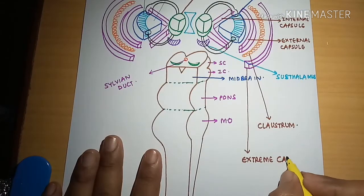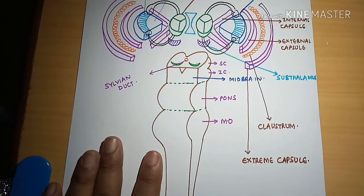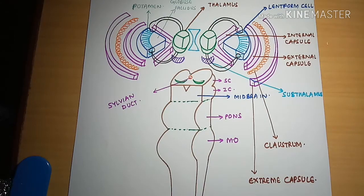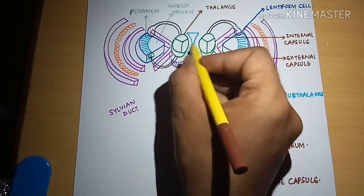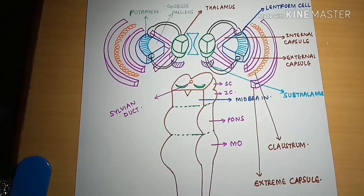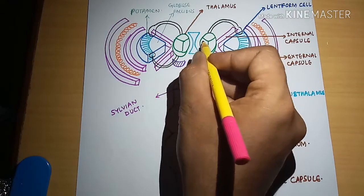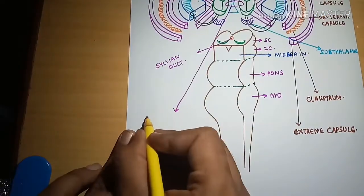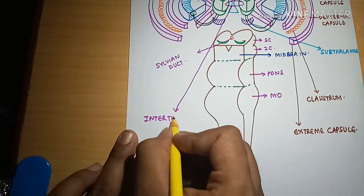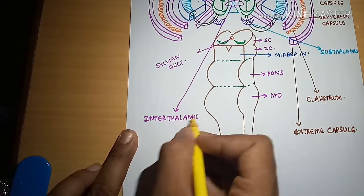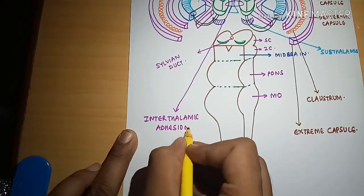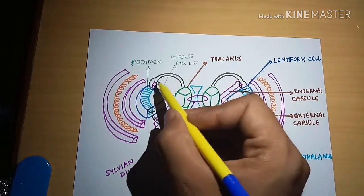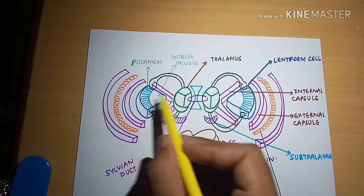This is the extreme capsule. The two thalami on both sides communicate and join together through the interthalamic adhesion. There is also a C-shaped nucleus present which joins the lentiform nucleus and the subthalamus together.